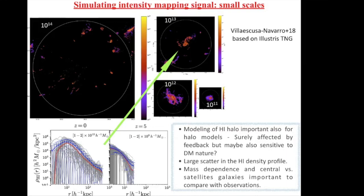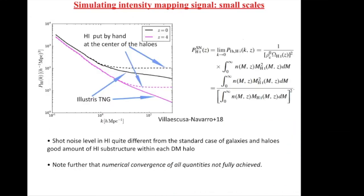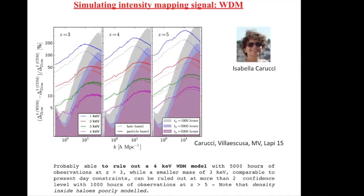A recent paper by Villaescusa-Navarro addresses the distribution of HI inside galaxies at high redshift, recovering the raw HI profile. There is a large physical scatter — not statistical — because each galaxy's environment, physics, and feedback are different. If you want to implement this well in your model down to the smallest scales to address warm dark matter, this scatter must be taken into account.